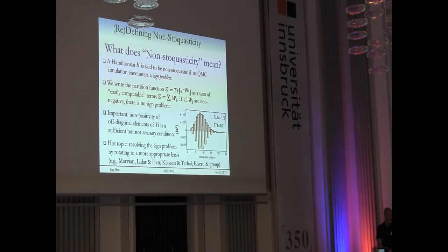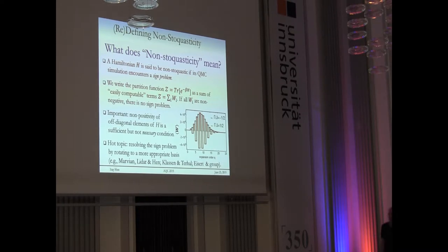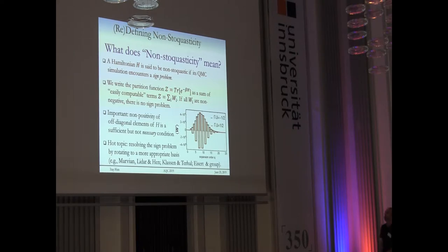What is non-stoquasticity? The way I would define it: a Hamiltonian H is non-stoquastic if its quantum Monte Carlo simulation has a sign problem, because that would mean you cannot simulate it classically. To figure out when that happens, we take the partition function — the trace of e to the minus beta times the Hamiltonian — and write it as a sum of easily computable terms. If all these terms are non-negative, then we don't have a sign problem.